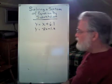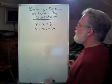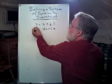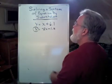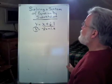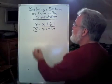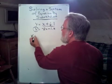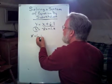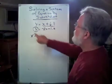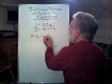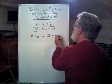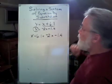If that's the case, then let's do a little substitution. I have a y right here, and I know that y equals x plus 6.1. So I'm going to say that x plus 6.1 equals, well, this y equals negative 2x minus 1.4. There we go.